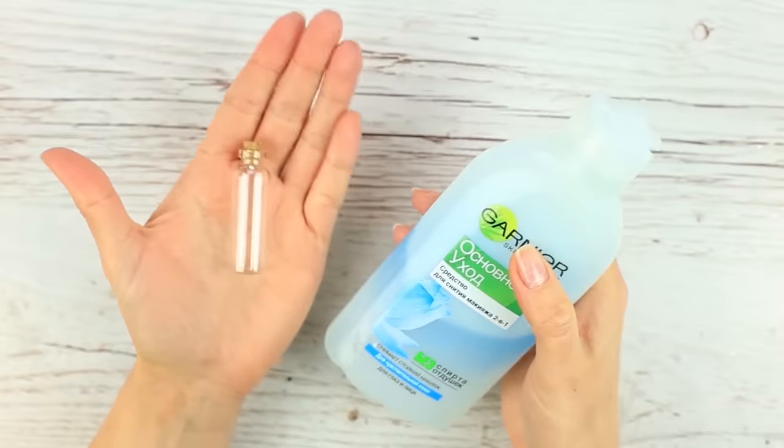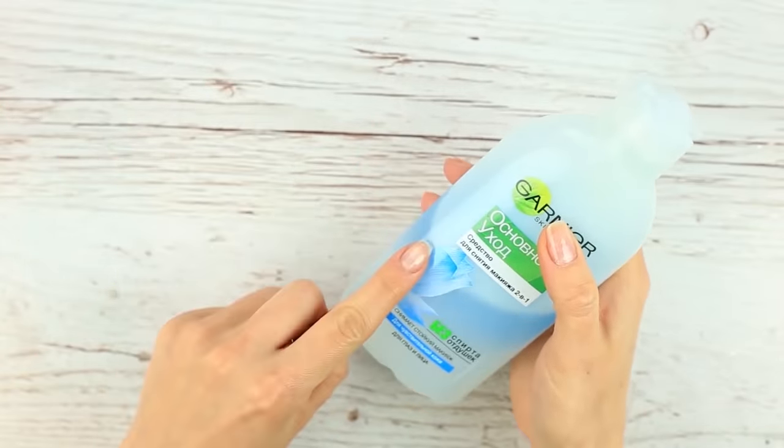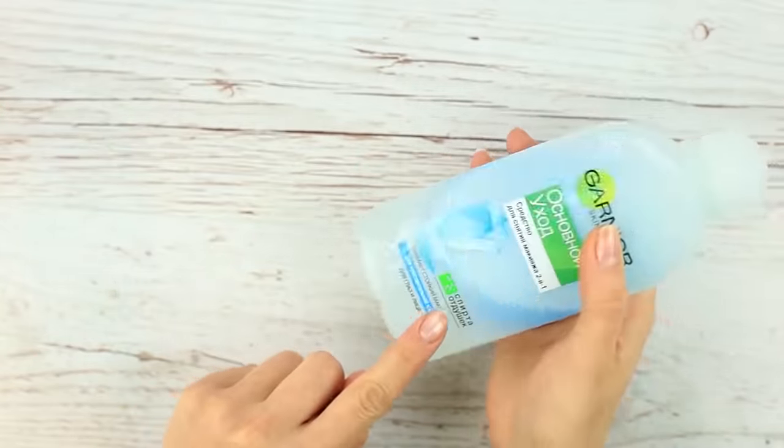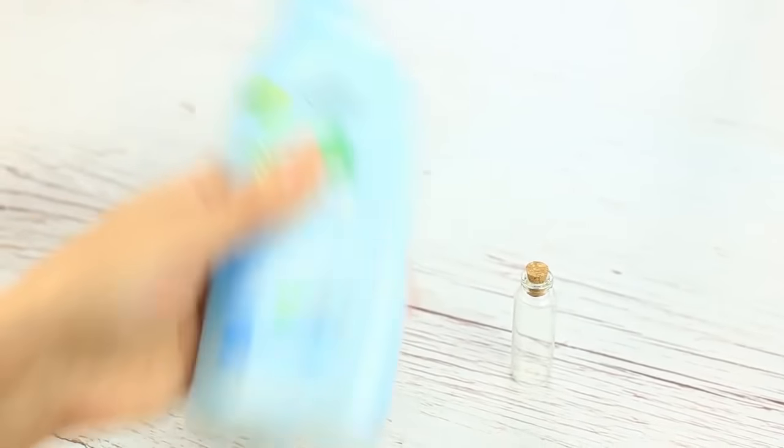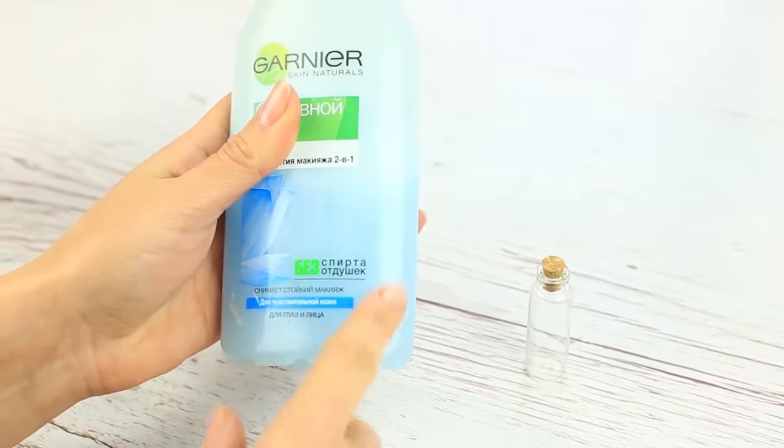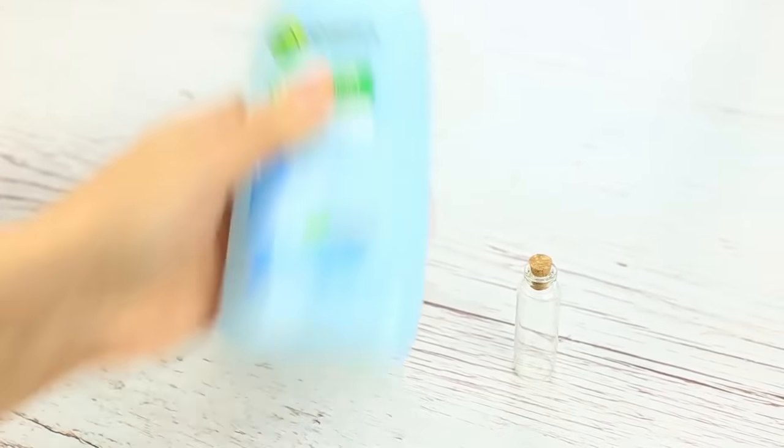We'll need a clear glass vial with a stopper and 2-in-1 makeup remover. This remover contains oil and water base. The oil layer is blue. It's lighter than water. That's why it's always on top.